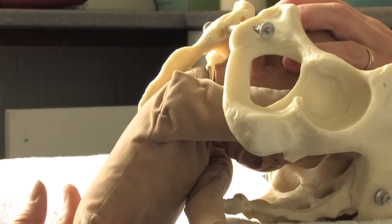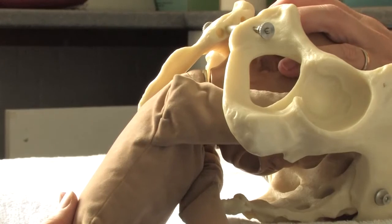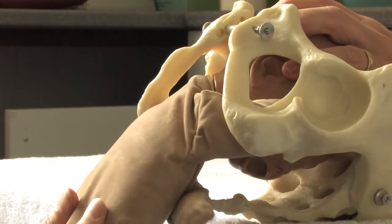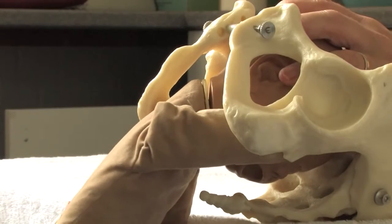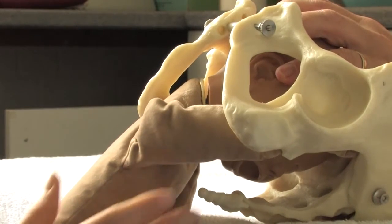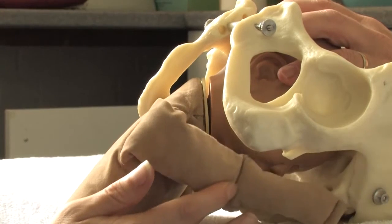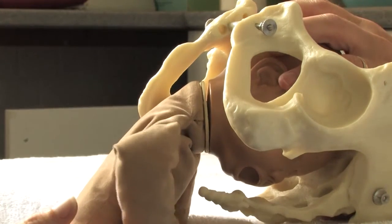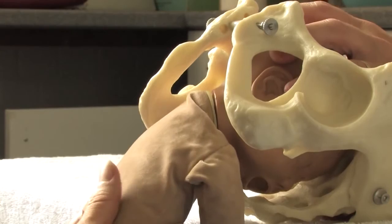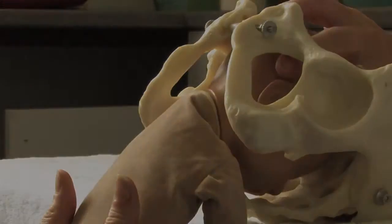As the head enters the pelvis, the sagittal suture is in the transverse diameter in the brim of the pelvis. The occiput rotates forward along the left side and the nape of the neck, the suboccipital region, is on the undersurface of the symphysis pubis.